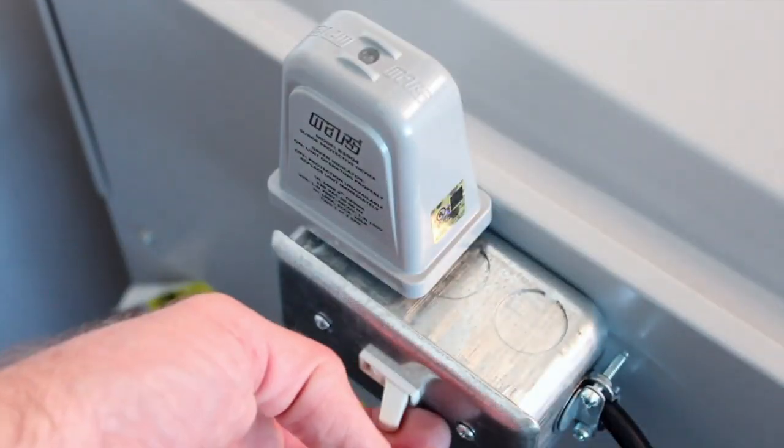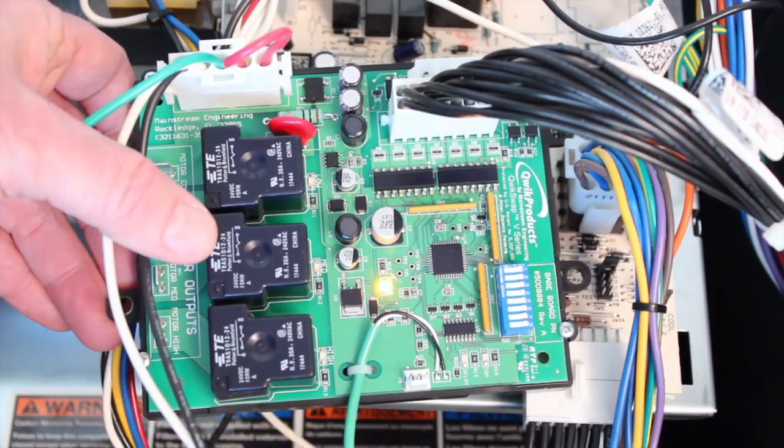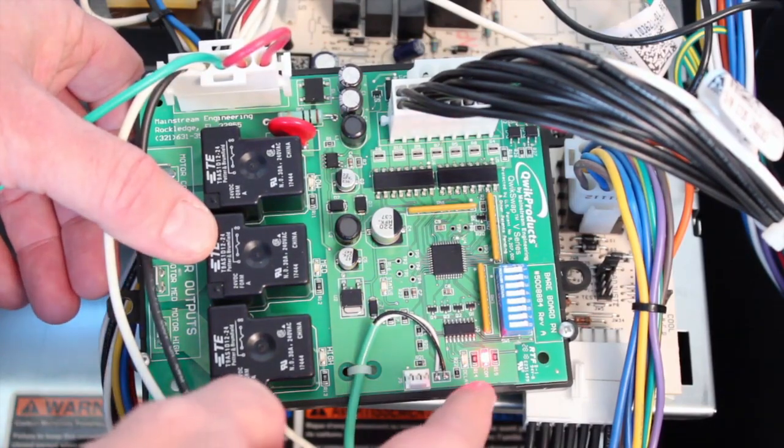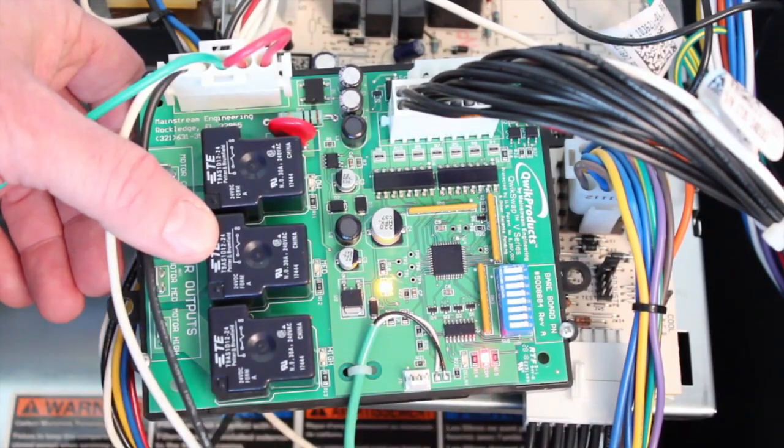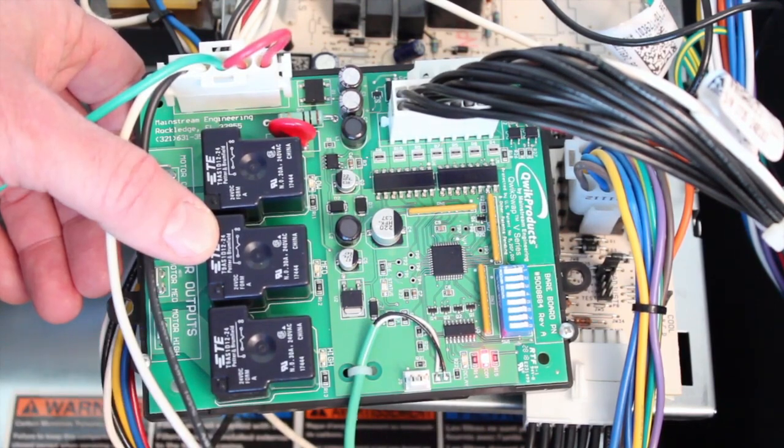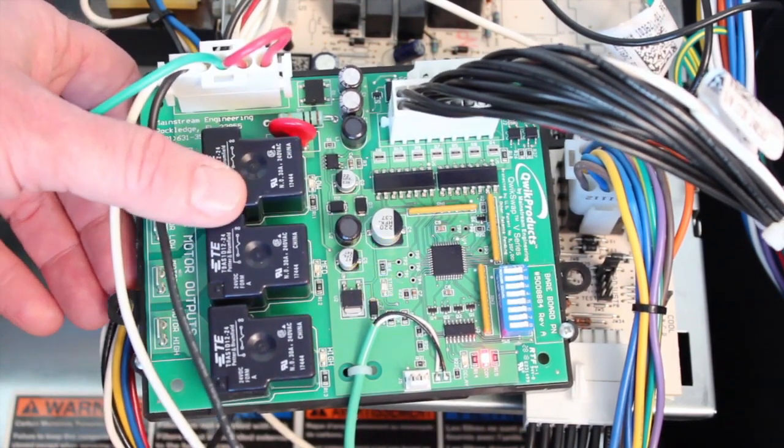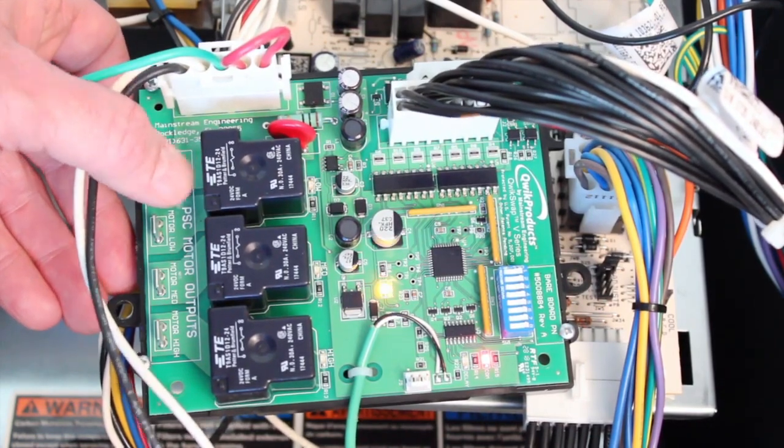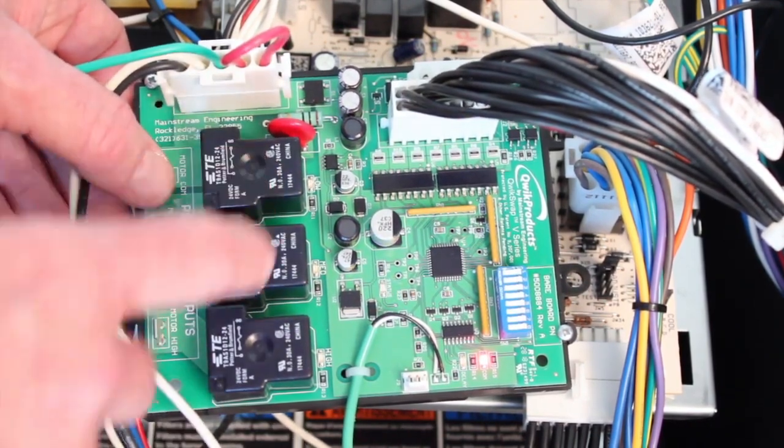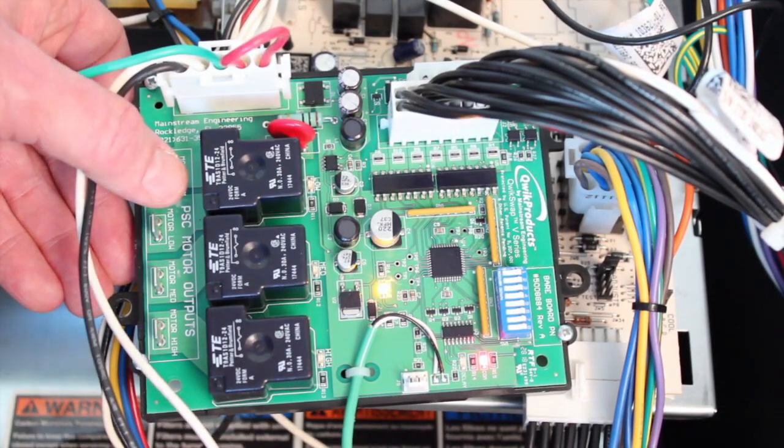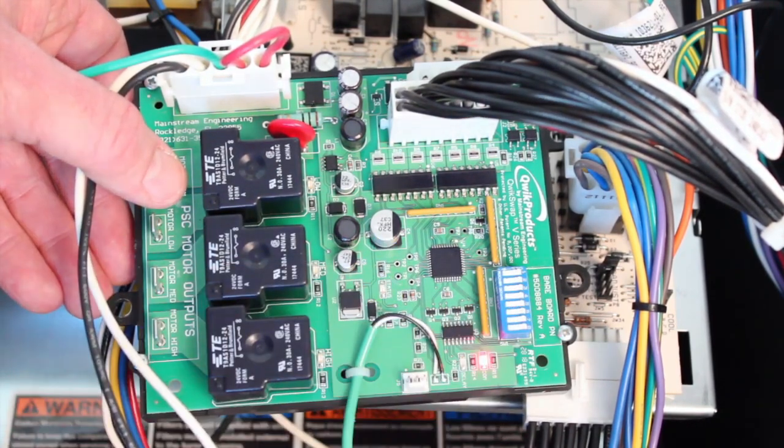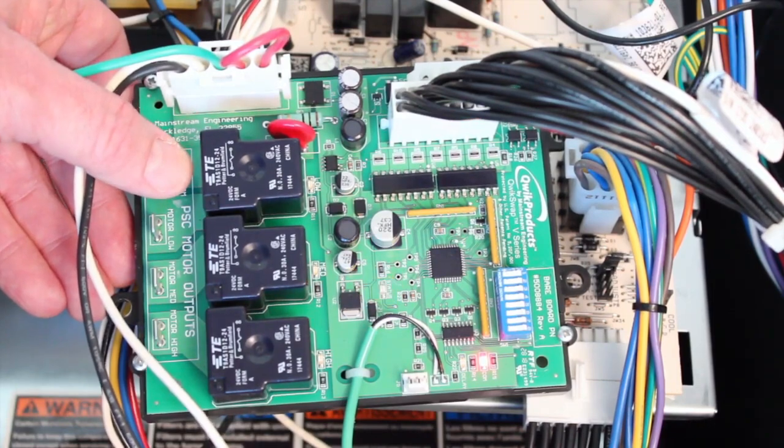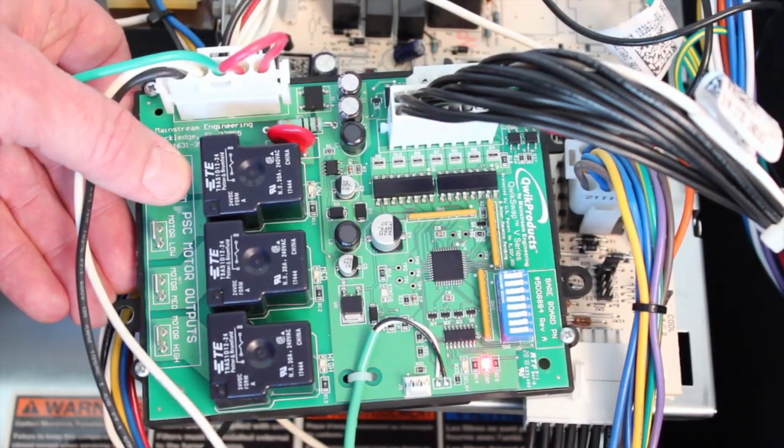Step three, apply power to the system. We have a solid red communication LED and we have a flashing amber LED, which indicates that the QuickSwap board is communicating correctly with the OEM control board. If any of these relays had come on, there's a procedure in the appendix to go through the dip switches to further configure this board. But in this case, we are good to proceed with the motor change-out.